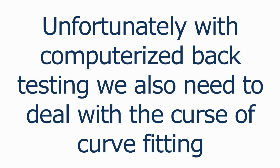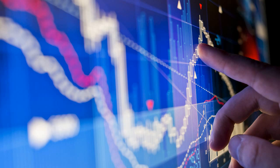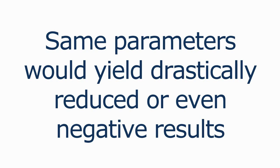Unfortunately with computerized backtesting we also need to deal with the curse of curve fitting. Curve fitting occurs when the strategy parameters are tuned so that they produce optimized results for the specific set of historical data that was tested. With any other sort of testing data the results might be radically different. For example, we might run a test over a period that saw a huge price swing due to a major news event — a curve fitted strategy may be tuned to capture the maximum profit from those swings, thus inflating its overall results.